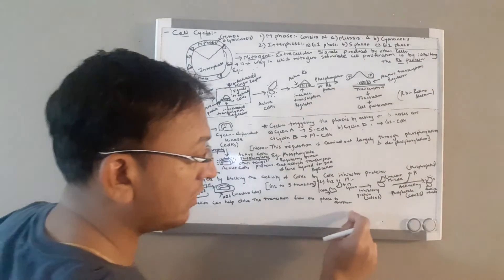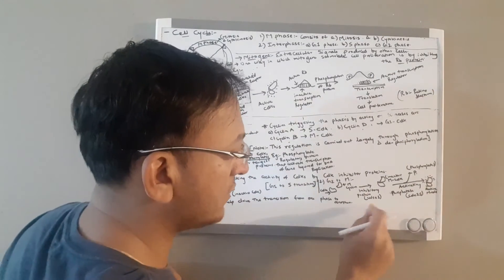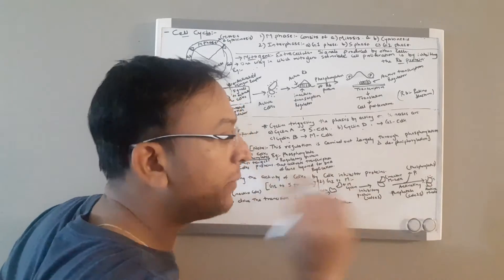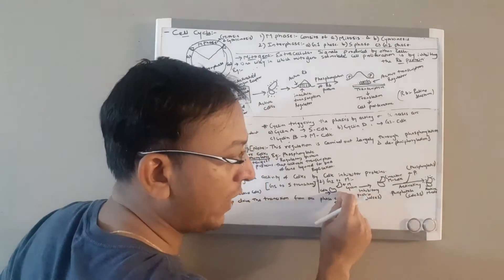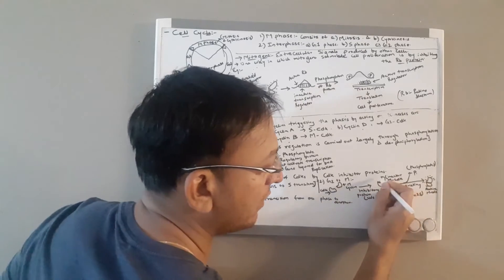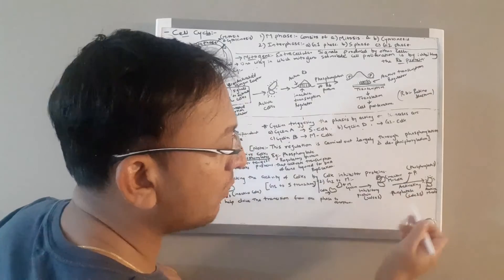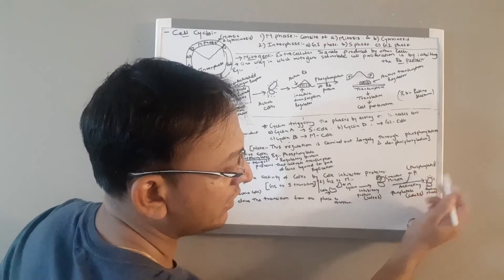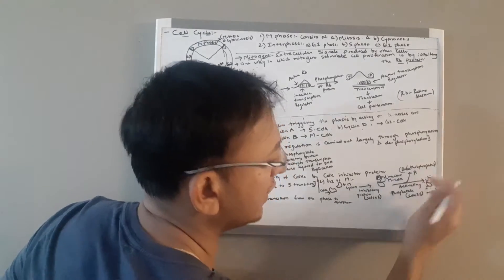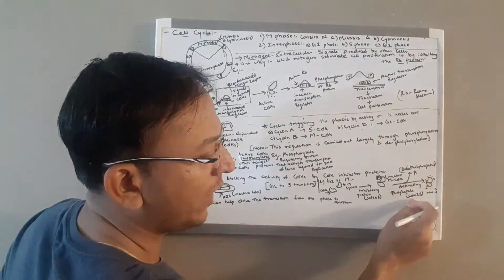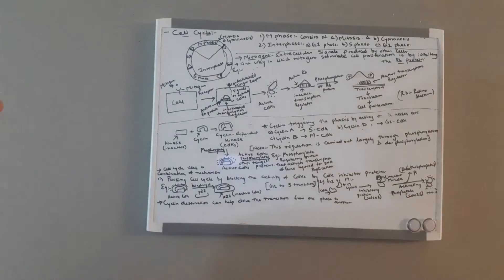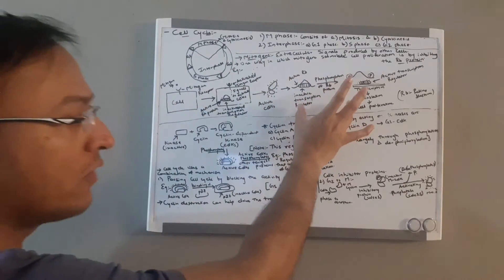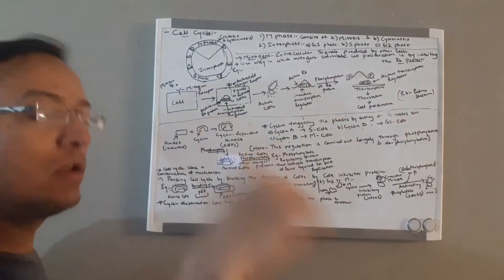To clarify the M-CDK activation: when M-Cyclin joins with CDK to form M-CDK, there is an inhibitory phosphorylation present. To become active, this phosphate must be removed by CDC25 phosphatase through dephosphorylation, which then activates M-CDK. This is how the cell cycle is triggered by mitogens — a one-way mechanism to activate the cell cycle.